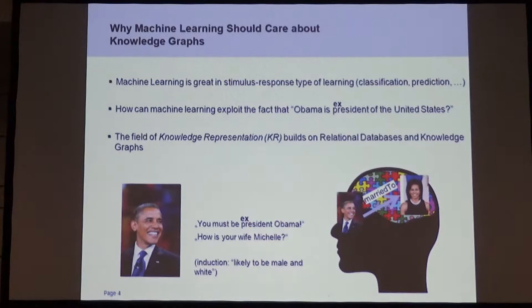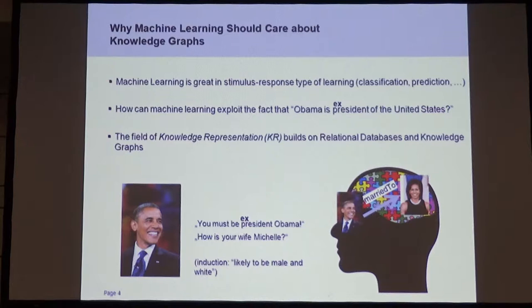Why should machine learning care about knowledge graphs? Machine learning is great at input-output, stimulus-response type of learning, classification, prediction, and so on. But how can machine learning exploit the fact that Obama is an ex-president of the United States? This type of knowledge is covered in a field called knowledge representation and is closely related to relational databases and knowledge graphs.